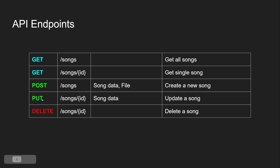A PUT request is used to update a song with new data. A POST request to /songs creates a new song — it accepts a file to send to Digital Ocean Spaces and song metadata like title and artist to store in the database. A DELETE request with a song ID deletes that specific song. So we have GET, POST, PUT, and DELETE — giving us full CRUD on the back end, which the React front end calls to interact with.